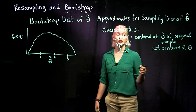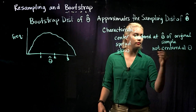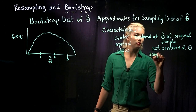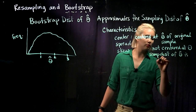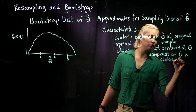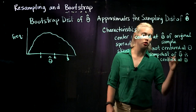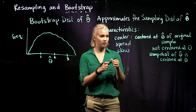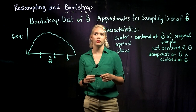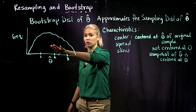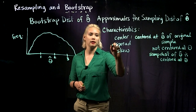This is notable because our sampling distribution of theta hat is centered at theta, assuming that we have an unbiased estimator. How about spread? Does the spread of the bootstrap distribution approximate the spread of the sampling distribution? And the answer for that is yes.